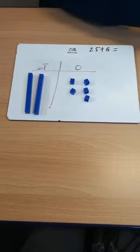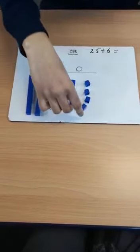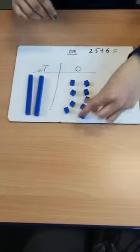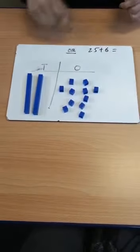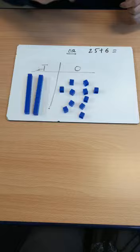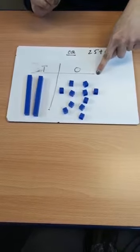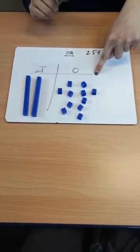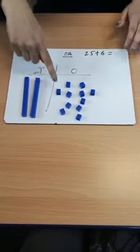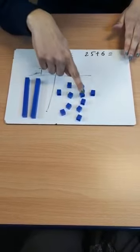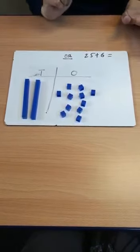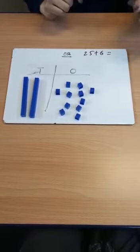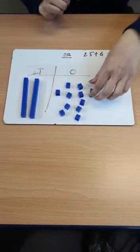We're going to add 6: one, two, three, four, five, six. And we're going to see the ones column to make sure that it's not going to be over 9. So 1, 2, 3, 4, 5, 6, 7, 8, 9, 10, 11. So you've got 11 ones. So what we need to do now is take 10 ones.